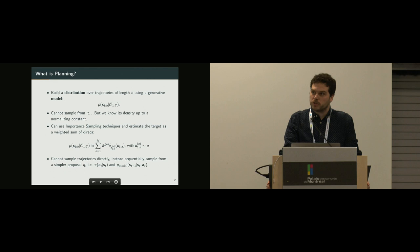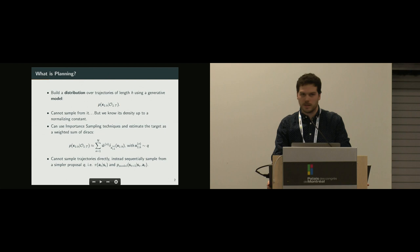Unfortunately, we cannot sample from that distribution, but we know its density up to a normalizing constant. So that looks a lot like an importance sampling problem. So let's say I could sample trajectories. I would just sample them from Q, from a certain proposal, and then I would weight them by their normalizing constant, and I could build a distribution.